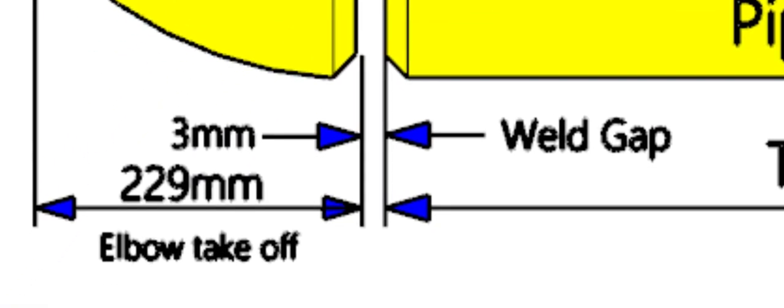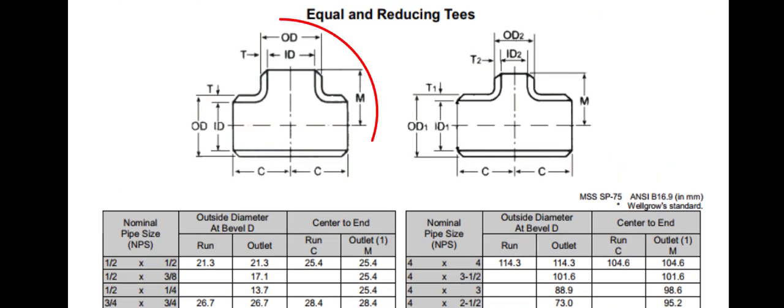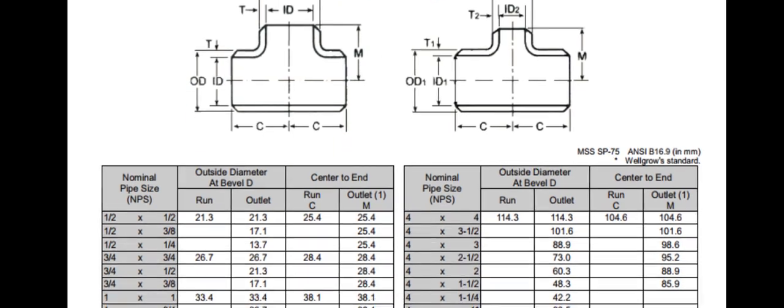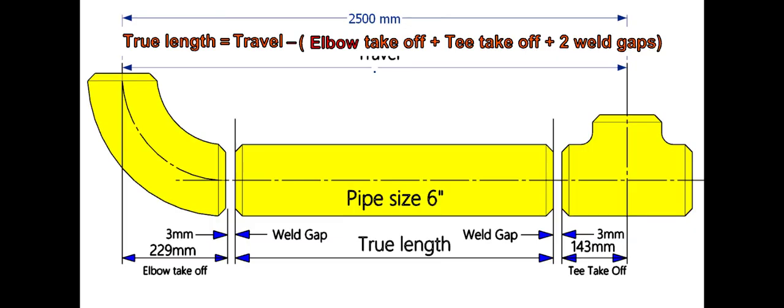Let us check the takeoff length of the tee in the chart. In the equal tee section, check the dimension of six inches and in column C. 142.7, let us take it as 143 millimeters.